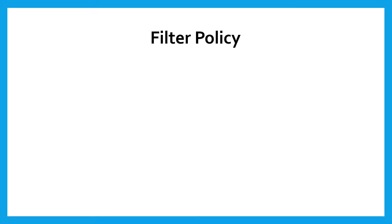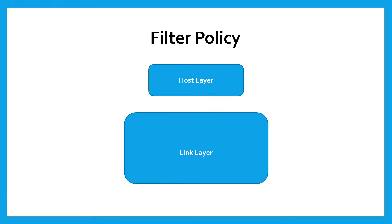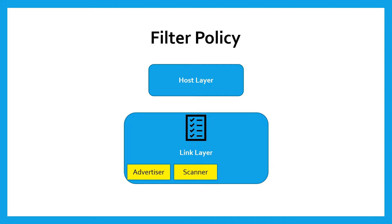Hello world! In today's video we are going to look at the different filter policies associated with different states of the link layer. I've already made a video which explains the meaning of filter accept list or white list in BLE, and the link to that will be in the description below, so make sure you've checked that one out first. In this one we'll look at the advertiser filter policy, scanner filter policy, and initiator filter policy, and in the end I have also covered an example which explains the importance of white list or filter accept list in BLE devices.